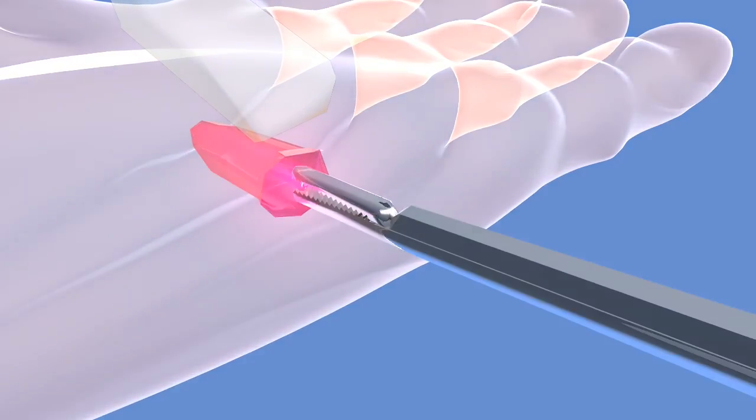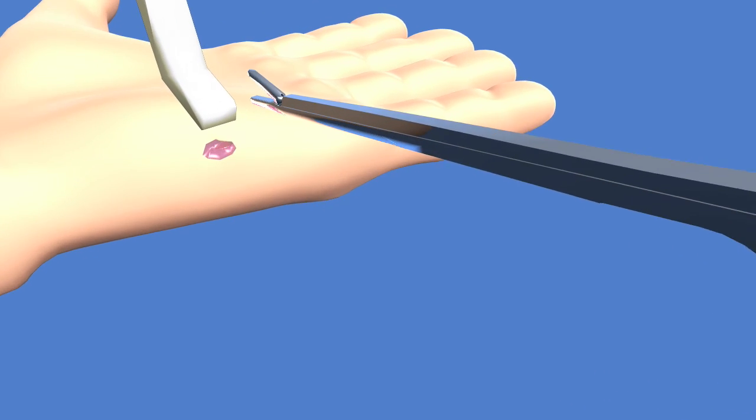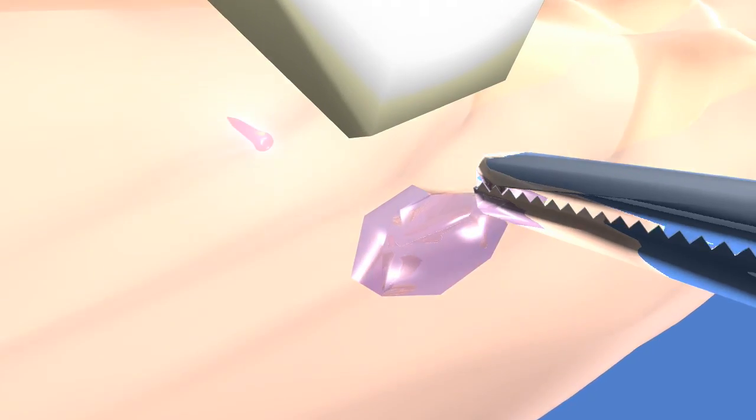Again, through a small incision, the alligator forceps are introduced under ultrasound guidance, which demonstrates sonographically the forceps and the wood foreign body.